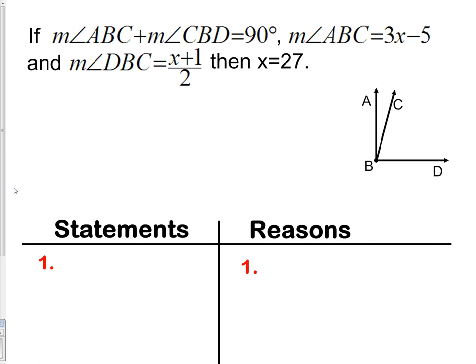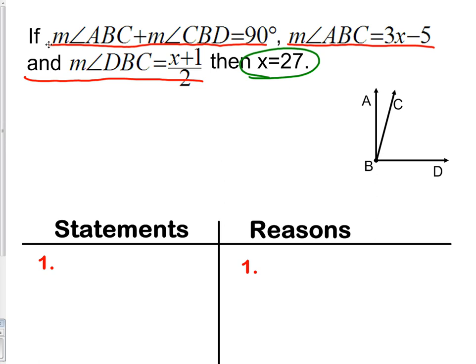Here's one that looks a little different because we have more of a geometric example. The first thing we need to do is identify the given information — the given information is our hypothesis. We have the measure of angle ABC plus the measure of angle CBD equals 90 degrees. We also have the measure of angle ABC equals 3x minus 5, and the measure of angle DBC equals x plus 1 over 2. Our conclusion is what we're trying to prove: that x equals 27.